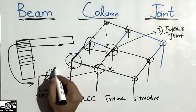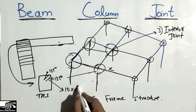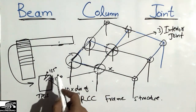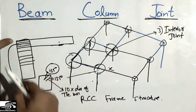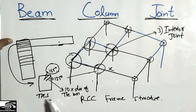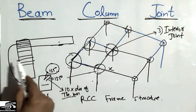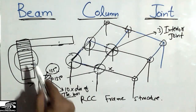Both hooks should be 135-degree hooks and the length of the hook should be equal to 10 times the diameter of the tie bar, according to the Indian Standard IS code. According to the American standard ACI code, the hook should be 135 degrees — also called a seismic hook — and the hook length should also be 10 times the diameter of the tie bar. These ties should be closely spaced at the joint, more so than in non-joint regions.